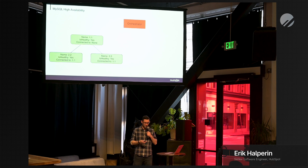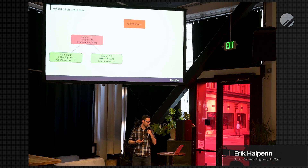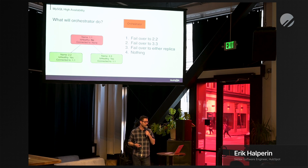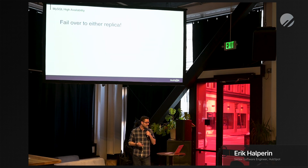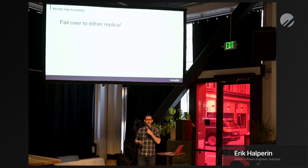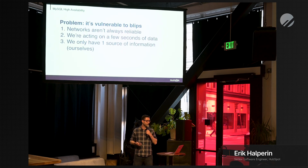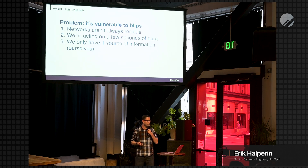What happens when the primary is no longer healthy? In this naive orchestrator implementation, this is all we know. In this situation, orchestrator will fail over to either replica — both are healthy, we don't know anything more, so we just fail over. A problem with this is that it's vulnerable to split-brain, networks aren't always reliable, we're acting on only a few seconds of data, and we only have one source of information — ourselves.